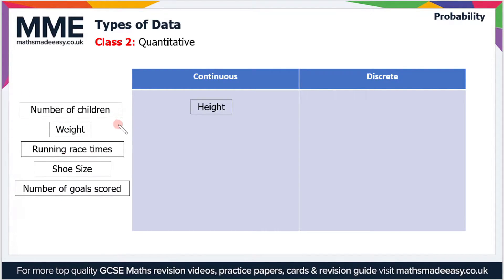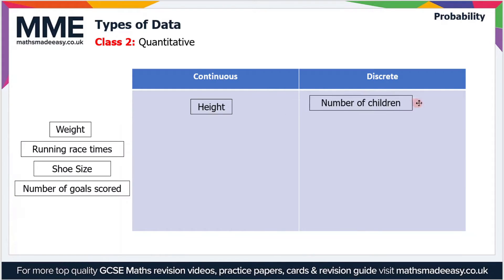The next example is number of children. You can only have fixed values for the number of children — one, two, three, four, and so on. You can't have half a child, for instance. So that is discrete data.